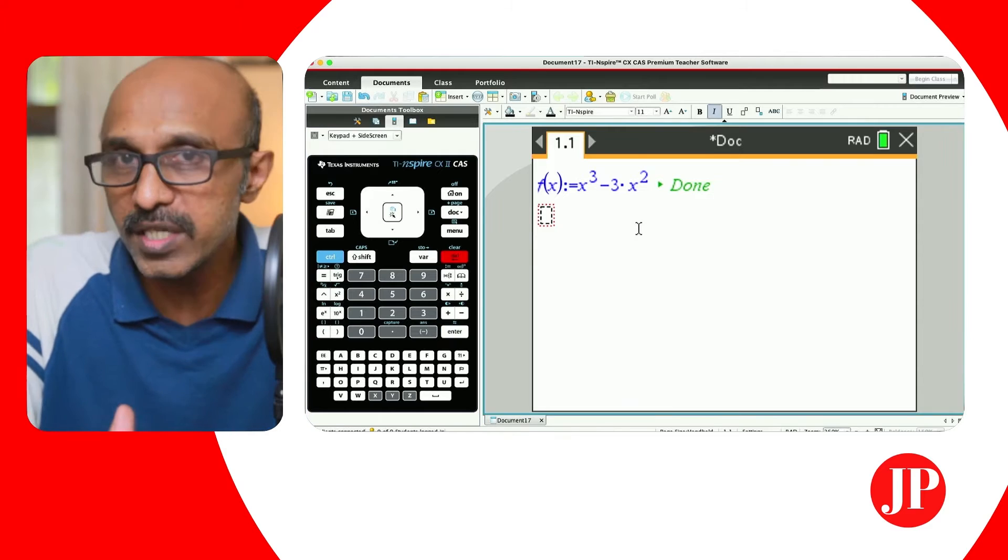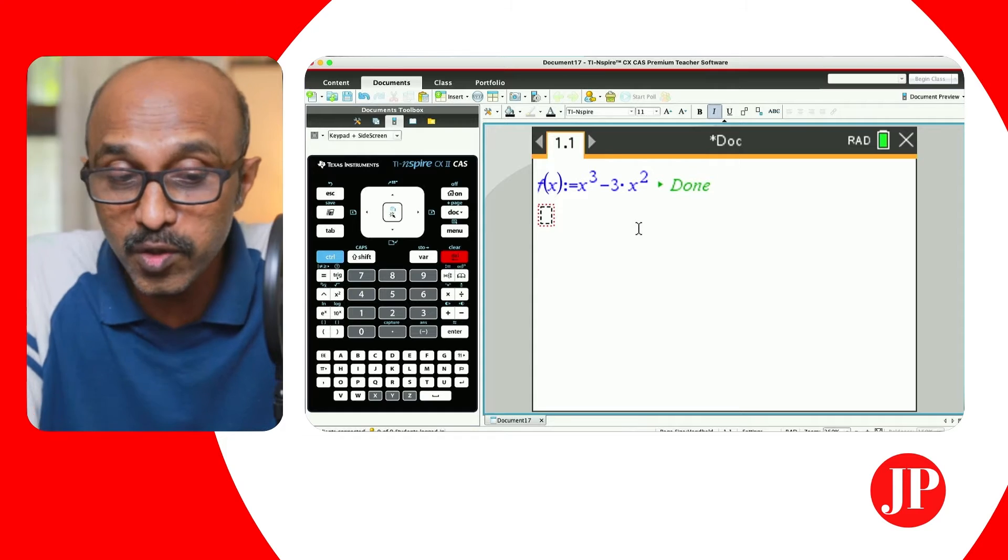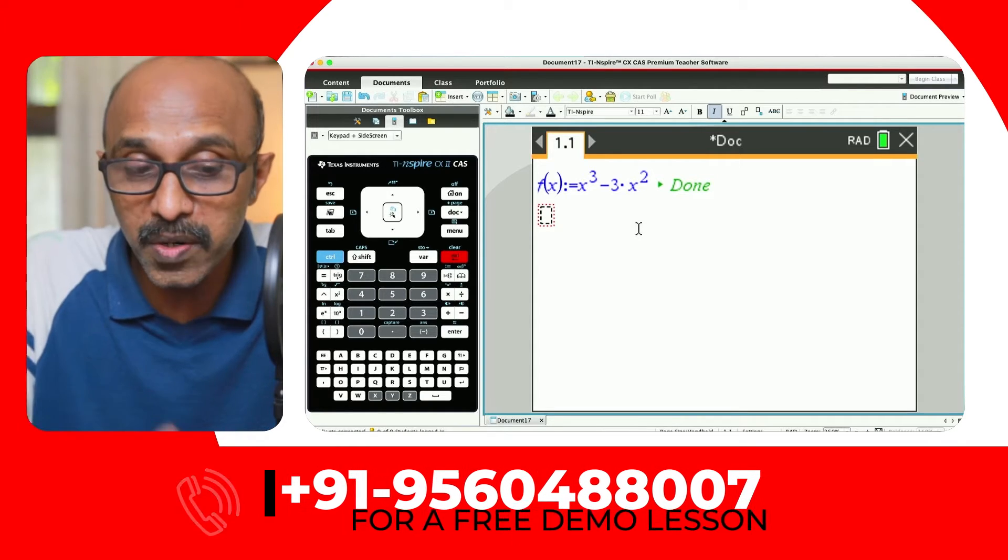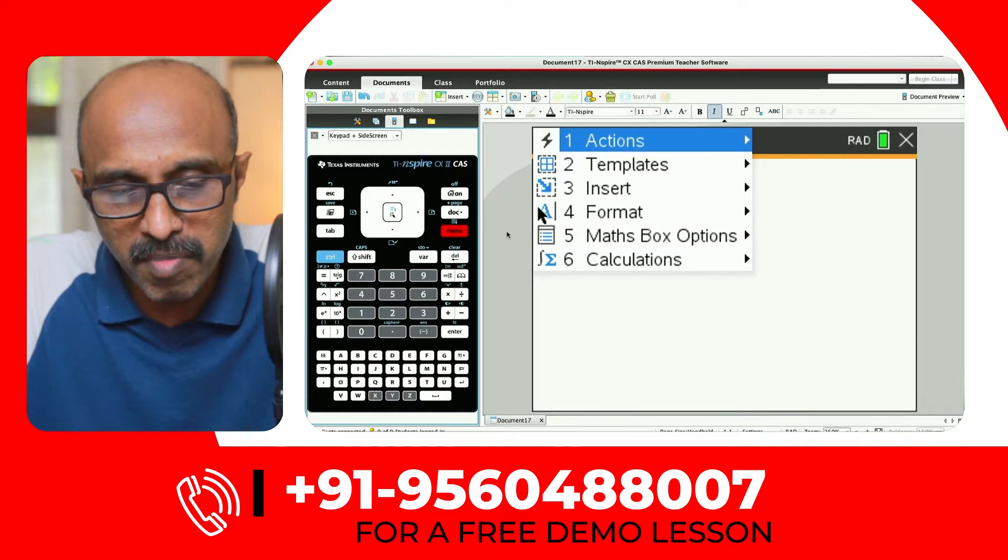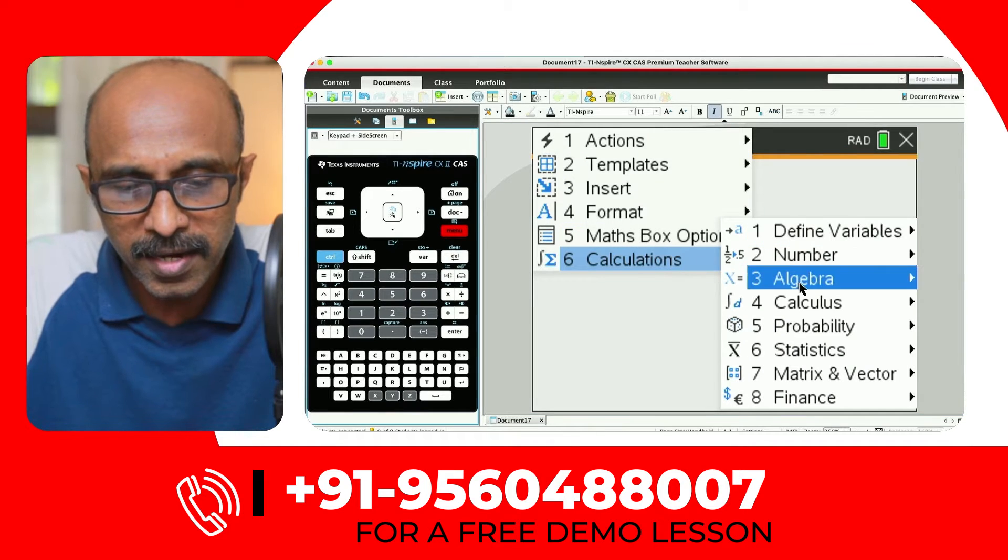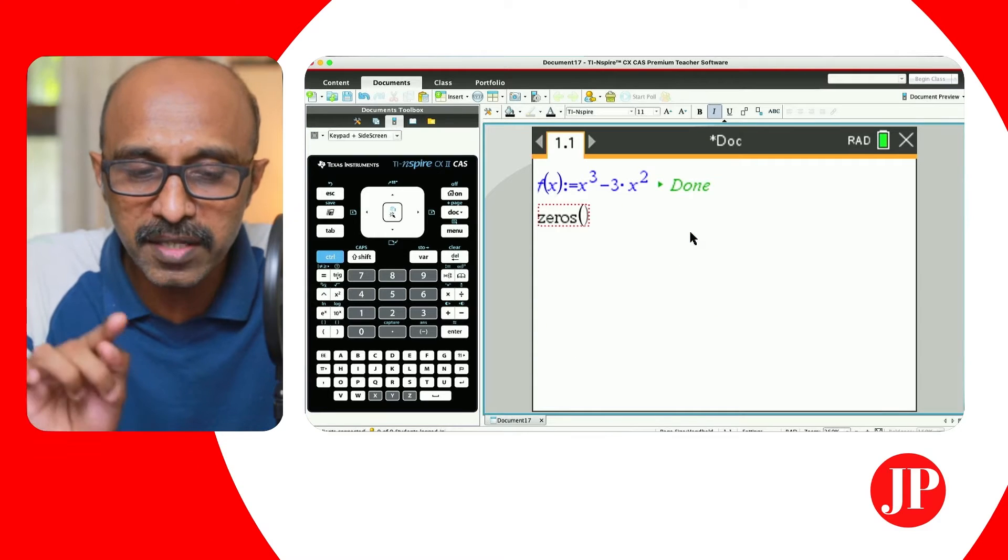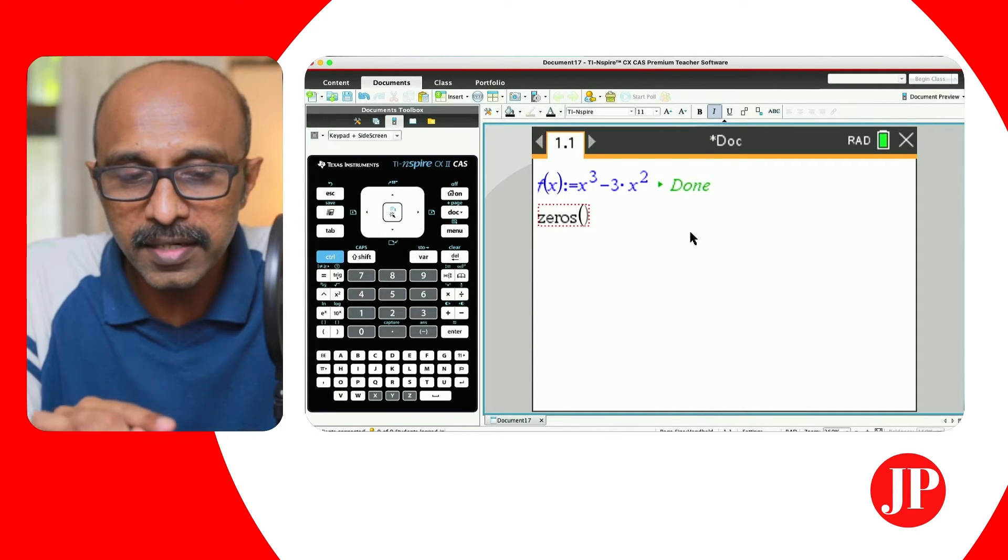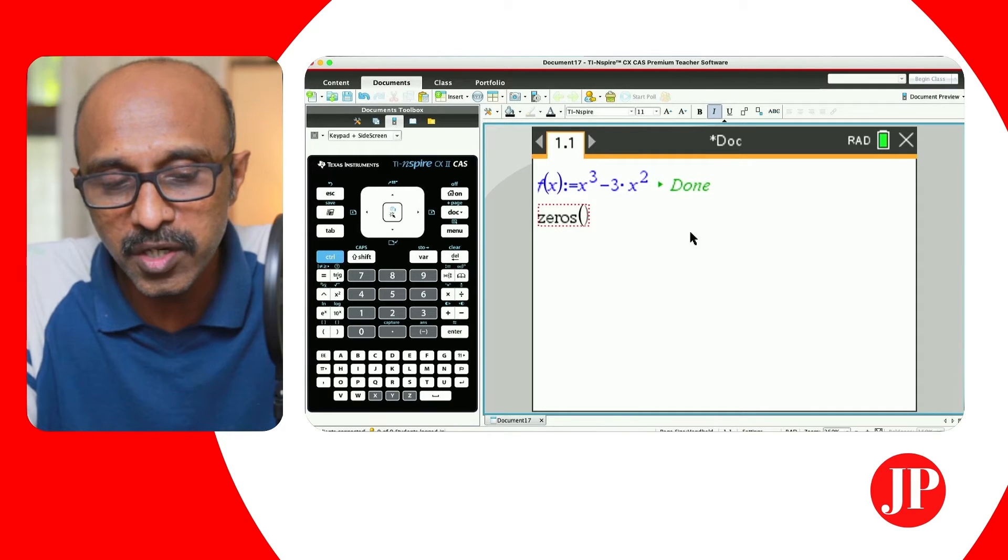One of the very common questions in calculus is to find the coordinates of the stationary point. Let's use that as an example for using widgets in calculus. What we're going to do is go to menu, calculations and algebra, and we're going to find the zeros because we're finding the zeros of dy/dx. To find the stationary point, the x coordinate of the stationary point is actually to solve dy/dx = 0.